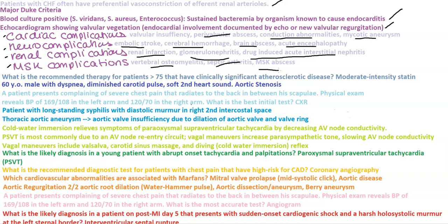For patients greater than 75 with clinically significant atherosclerotic disease, you want to start them on a moderate intensity statin. If they were less than 75, you would start them on a high intensity statin.